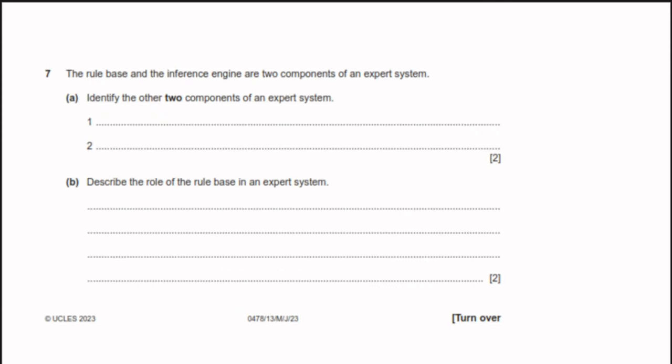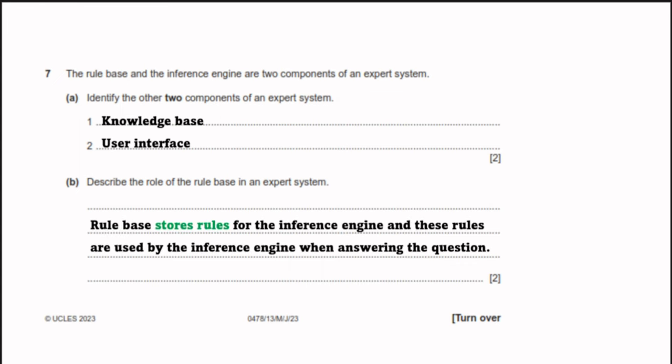Question 7: the rule base and inference engine are two components of an expert system. Two other components are the knowledge base and the user interface. The role of the rule base is to store rules for the inference engine — these rules are used by the inference engine when answering questions.